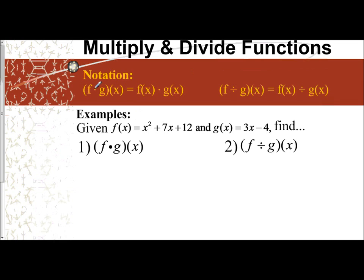So if I'm taking f times g of x, what that means is I'm just going to take f of x and multiply by g of x. If I take f divided by g of x, then I'm just going to take f of x divided by g of x. It's the same concept as addition and subtraction. If I'm going to multiply two functions together, you just multiply them. If I'm going to divide my two functions, you just divide them.